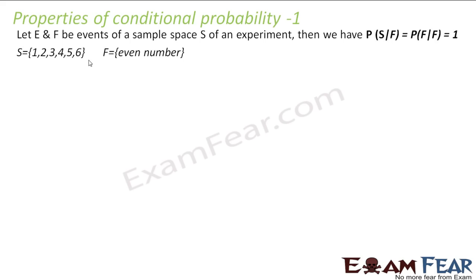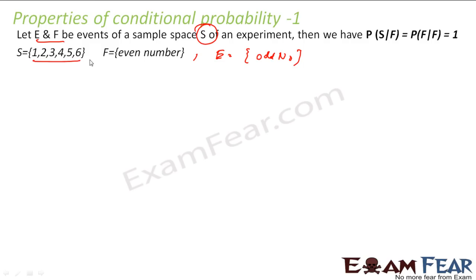Various properties of conditional probability. The first: let's suppose E and F are any two events. For example, F is the event of getting an even number when you throw a die, and E is getting an odd number. The sample space S has all the values 1, 2, 3, 4, 5, 6 because we are throwing a die.